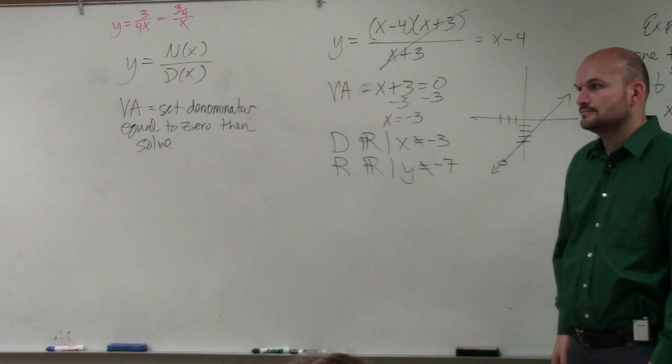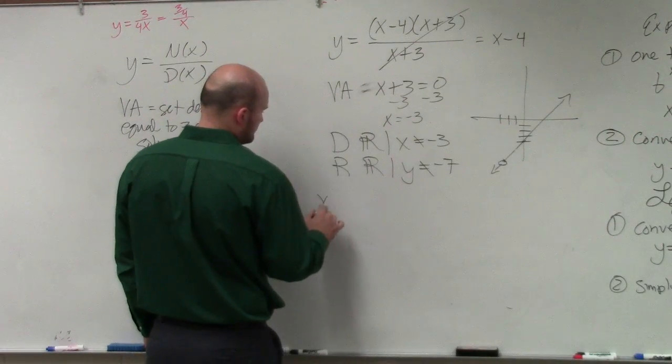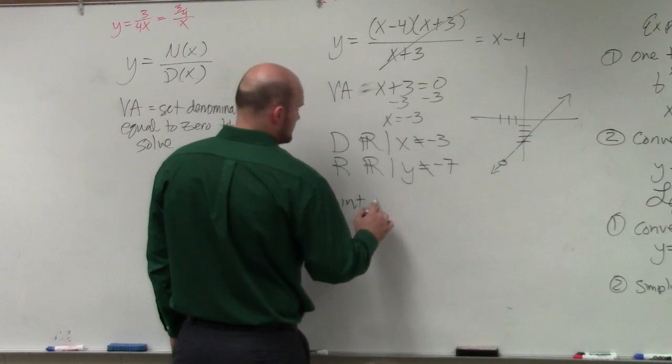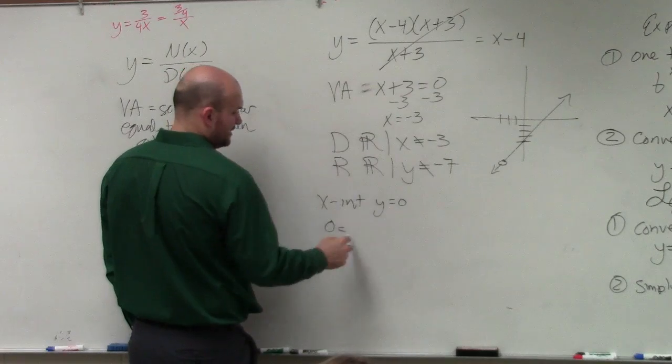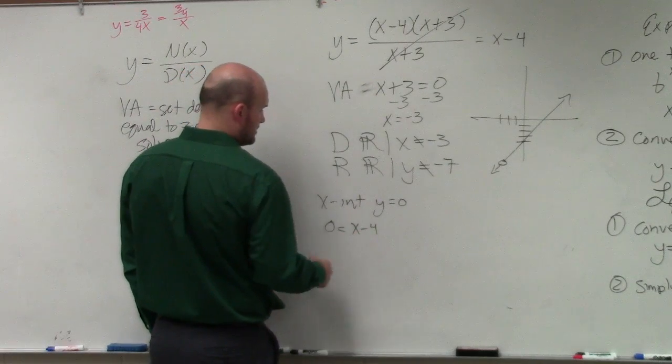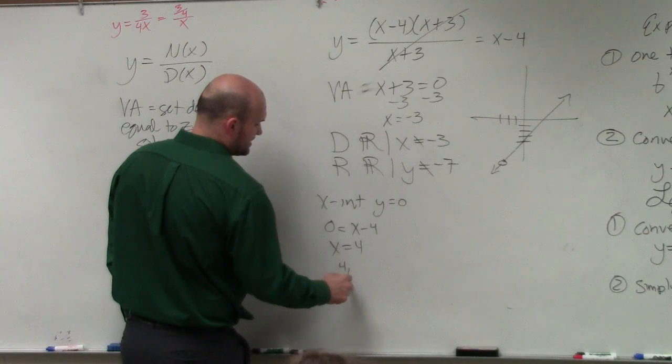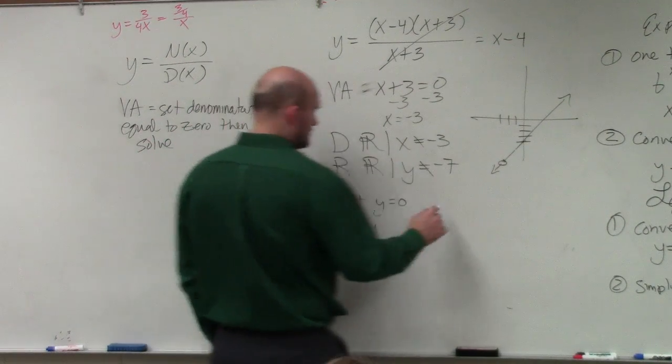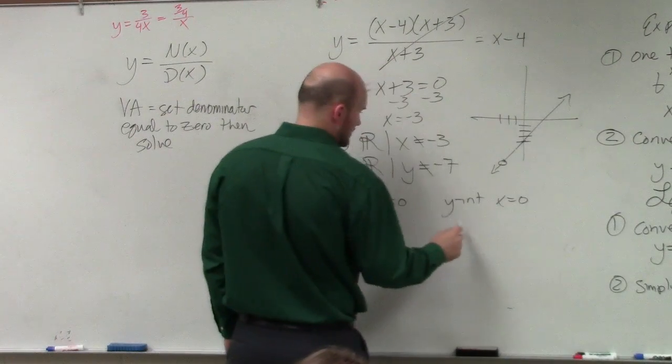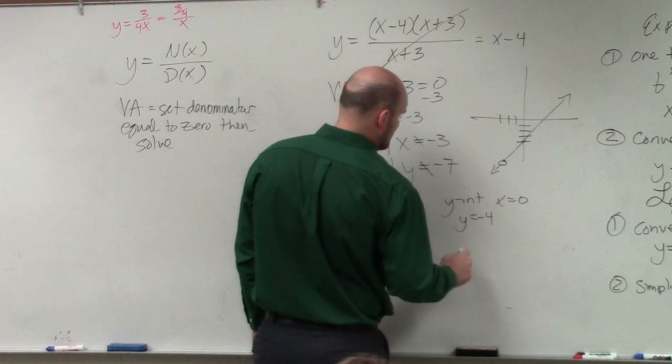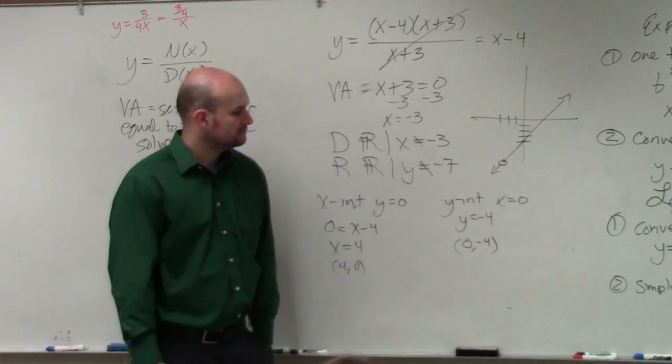And then we need to find the x and the y-intercepts. So x-intercepts, y equals 0. 0 equals, you could do it for either one, it doesn't really matter, x minus 4. So you get x equals 4. And you could write that as a coordinate point, as 4 comma 0. To find the y-intercept, x equals 0. y equals negative 4. 0 comma negative 4.